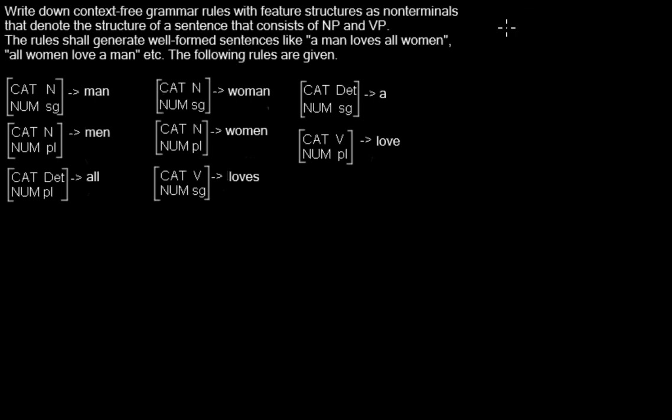Maybe you remember those phrase structure rules that look something like this. You have a sentence, or S, that expands to a nominal phrase and a verbal phrase. And you have the NP that expands to a determiner and a noun. And a verbal phrase that consists of a verb and another nominal phrase.